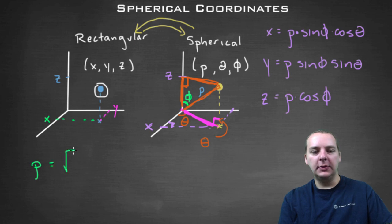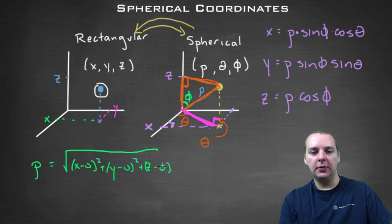So let's see. Rho would be the square root of (x - 0)² plus (y - 0)² plus (z - 0)². You can clean that up a little bit. That would give you x² + y² + z².